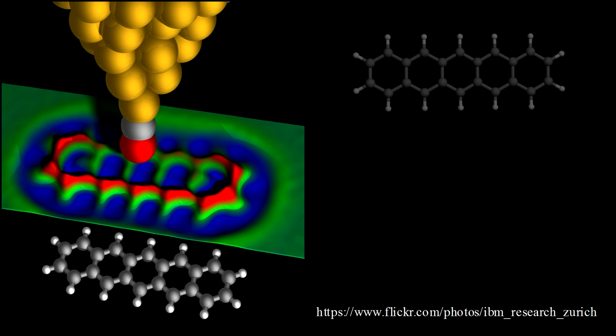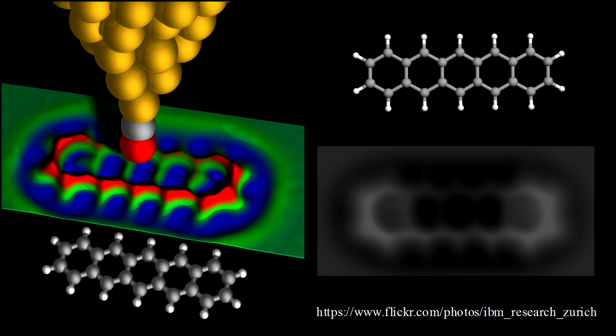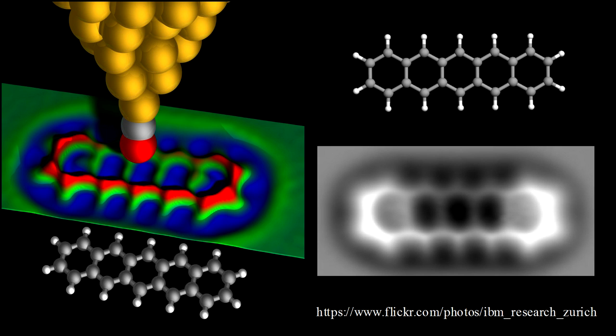Using atomic force microscopy, researchers at IBM Zurich have imaged a single pentacene molecule. In this image, the carbon rings and even the hydrogen atom bonds are clearly visible.